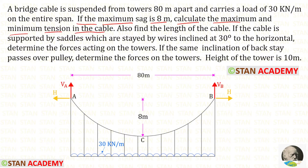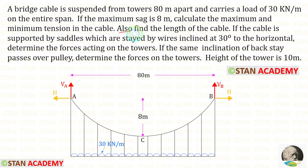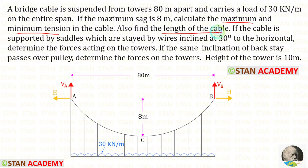We know that if the cable is suspended at the same level, the maximum sag will be at the center, which is given as 8 meters. We also need to find the length of the cable — we will see that part later. First, let us find the reactions, then the maximum and minimum tension, and then the length of the cable.